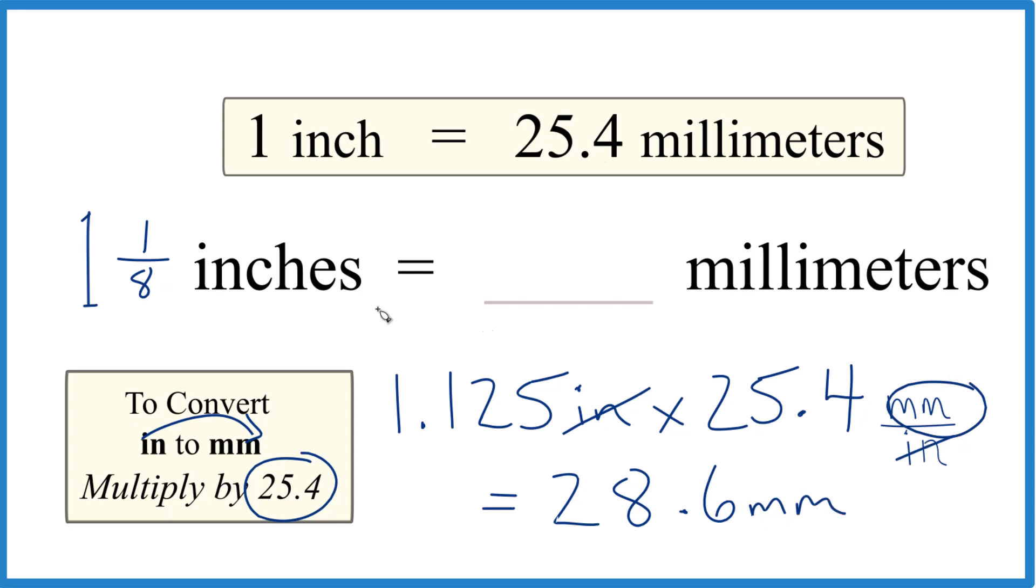And that's the unit we're looking for. So 1 1⁄8 inches or 1.125 inches is 28.6 millimeters. This is Dr. B., and thanks for watching.